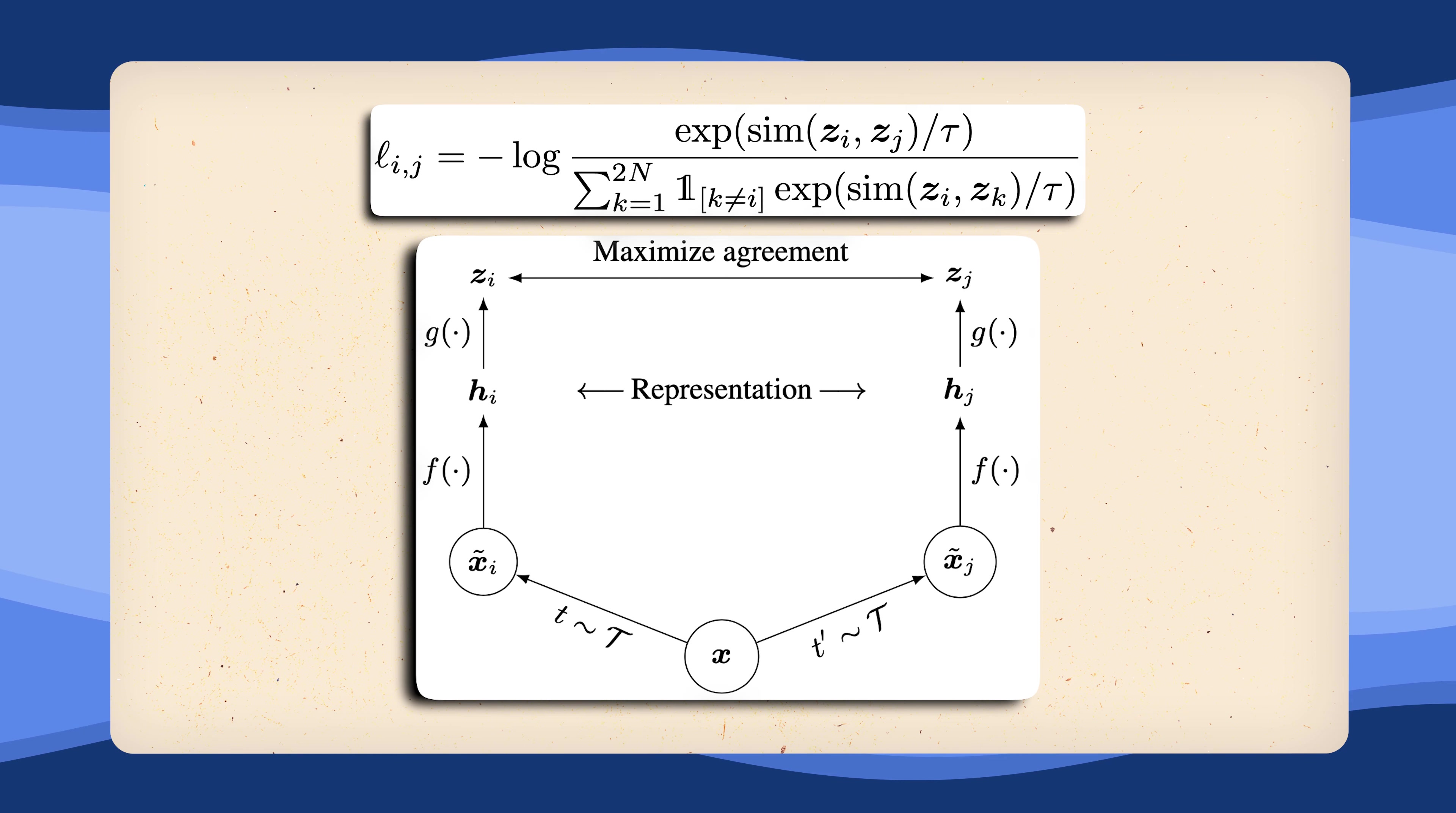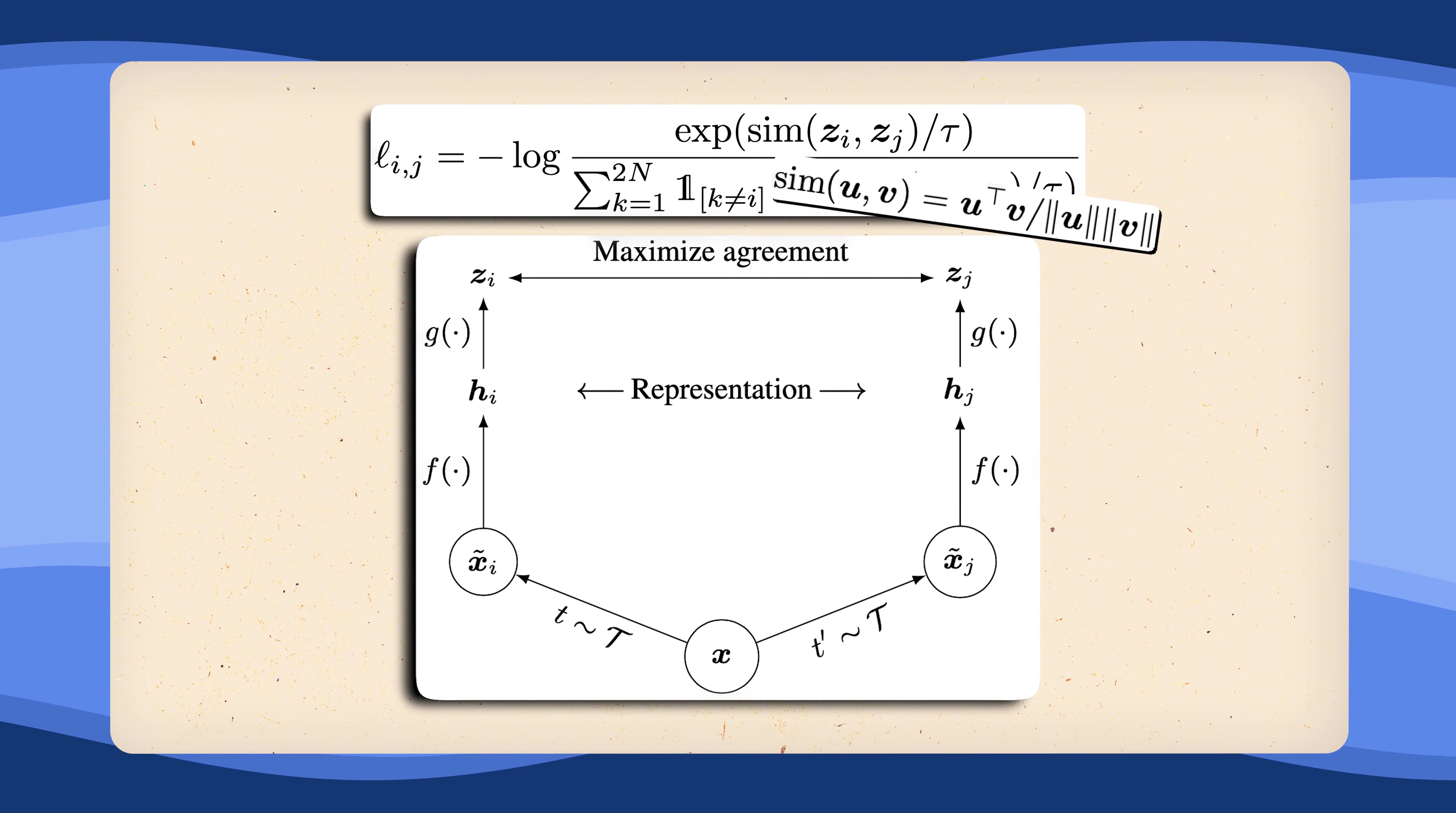In other words, we maximize the similarity between our positive samples and minimize the similarity between those positive samples and other negative examples. Previously we simply talked about directly minimizing the Euclidean distance between the two representation vectors, but SimCLR uses the cosine similarity as their measurement of similarity. So far, there is nothing that we didn't already know, but as mentioned, the devil lies in the detail.